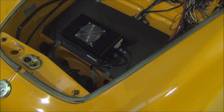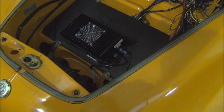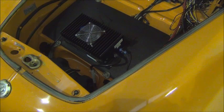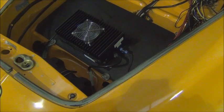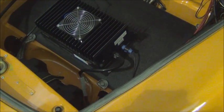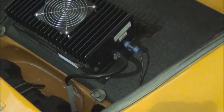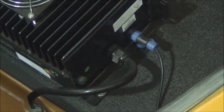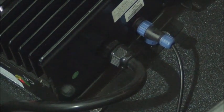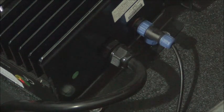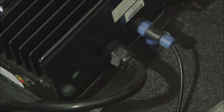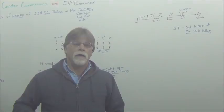So here's a shot of the connection that controls the enable for the Elcon charger. So as I mentioned, it must be shorted, the two pins, green wire and red wire, must be shorted in order to enable the charger to charge. By opening that connection, the charger stops charging.